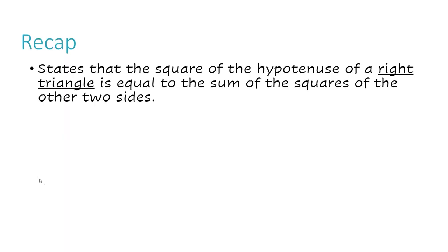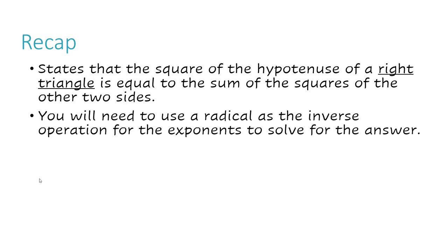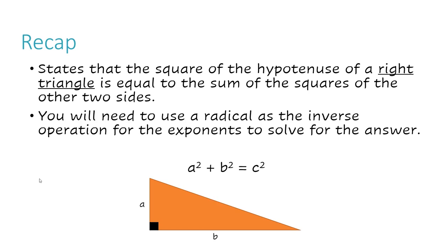Now let's take a recap. The Pythagorean Theorem states that the square of the hypotenuse of a right triangle is equal to the sum of the squares of the other two sides. You will need to use a radical as the inverse operation for the exponents to solve for the answer. The formula is a² + b² = c². If a triangle has two shorter lengths A and B adjacent to a right angle, the opposite side is the hypotenuse C. The A and B lengths are your legs, and the hypotenuse is the longest side.